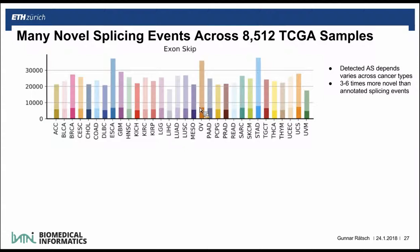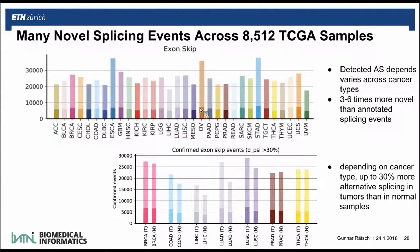We also see more alternative splicing in cancer samples compared to normal samples. For some cancer types there's a big difference in alternative splicing between tumor and normal — for instance, lung adenocarcinoma or lung squamous show quite big differences, while thyroid cancer does not show such a big difference. The hypothesis is that the splicing mechanism is somewhat disrupted in certain cancers, leading to additional splicing events.